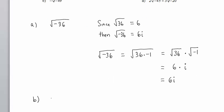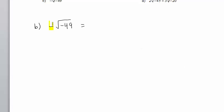In Part B, we have negative square root of negative 49. This negative sign means negative 1 times the radical, and the square root of negative 49 is 7i. So multiplying negative 1 and 7, we get negative 7 times i, or more simply, negative 7i.